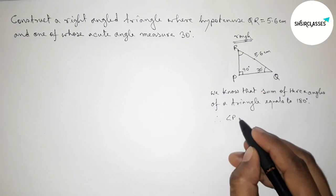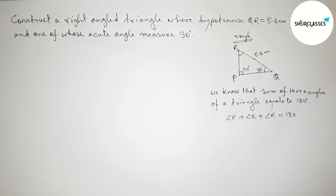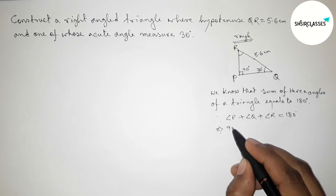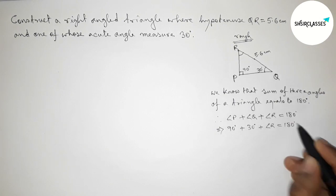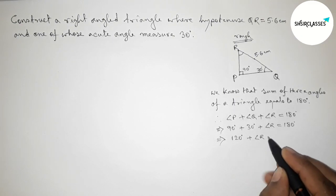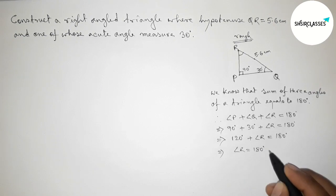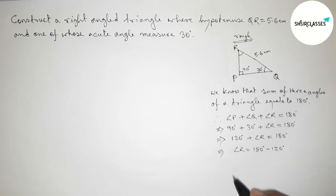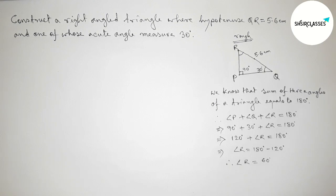Applying the theorem: angle P plus angle Q plus angle R equals 180 degrees. Substituting the known values — 90 degrees plus 30 degrees plus angle R equals 180 degrees. This gives 120 degrees plus angle R equals 180 degrees, so angle R equals 180 minus 120, which is 60 degrees.